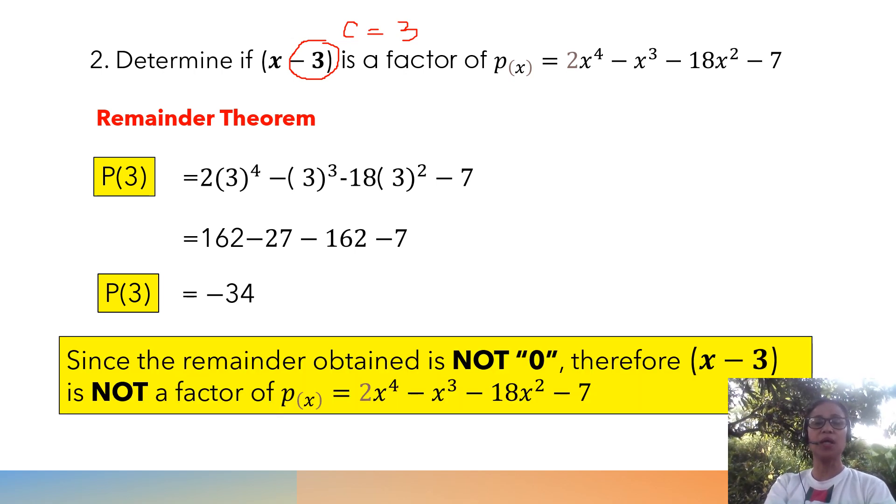Since the remainder obtained is not 0, therefore, the divisor x - 3 is not a factor of the polynomial 2x⁴ - x³ - 18x² - 7. I hope that you are able to understand how to apply the factor theorem in determining whether a divisor is a factor or not of a polynomial.